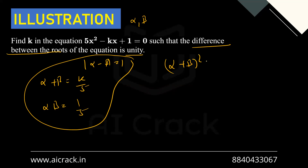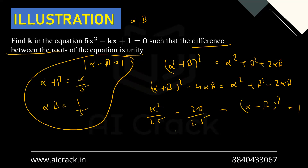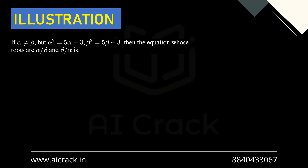We know (α + β)² = α² + β² + 2αβ. Subtracting 4αβ from both sides: (α + β)² − 4αβ = (α − β)². So k²/25 − 4/5 = 1, which gives k²/25 − 20/25 = 1. Cross-multiplying: k² − 20 = 25, so k² = 45, and k = ±√45.